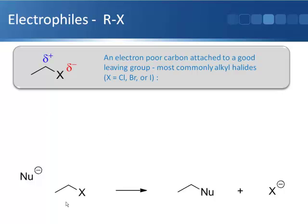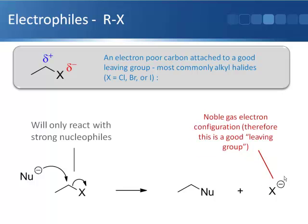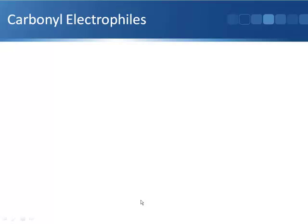If we have a standard primary alkyl halide where X can be any halogen, these aren't particularly reactive electrophiles, so you'd need a fairly strong nucleophile to react with it. The reaction occurs by bond formation between the nucleophile and this carbon, and then to make way for that new bond the carbon-halogen bond breaks, giving the substitution product. The halogen leaves as a halide anion, which is a quite stable anion because it has a noble gas electron configuration.